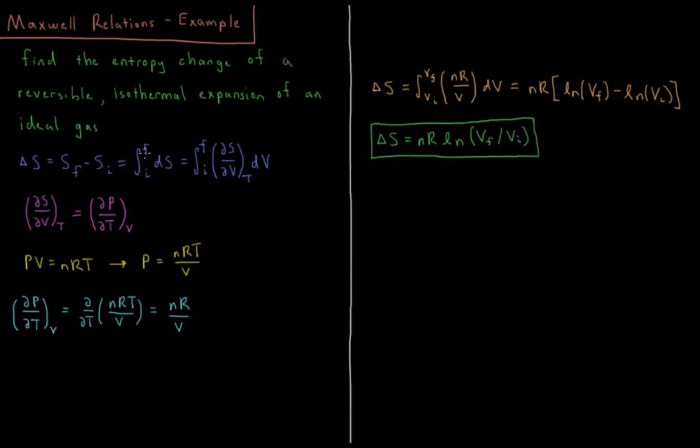So this is an integral from the initial state to the final state of the entropy that occurs during every point in the path along the way, which is equal to the integral from the initial to final state of the partial derivative of the entropy with respect to volume at constant temperature, since it's isothermal, integrated with respect to volume.